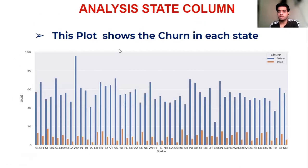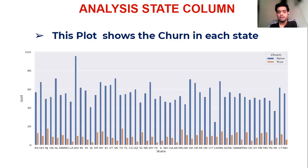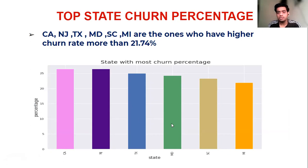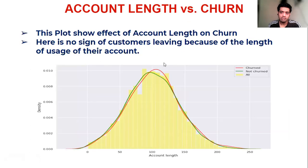Analyzing the 'state' column against the churn dataset, we found that some states have a higher churn rate than others. The top six states have a churn percentage greater than 21%. We will work on these states to improve customer satisfaction and network coverage.